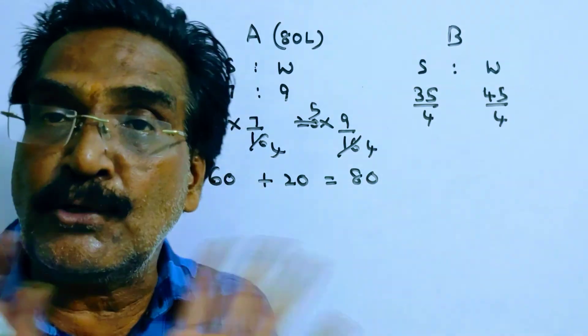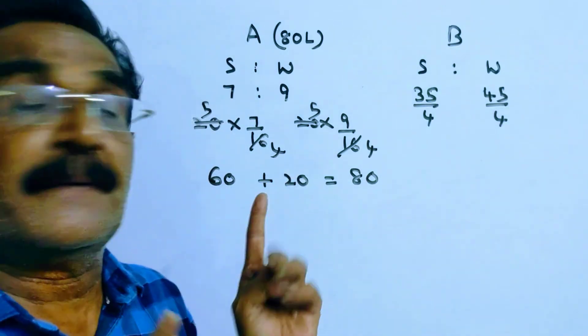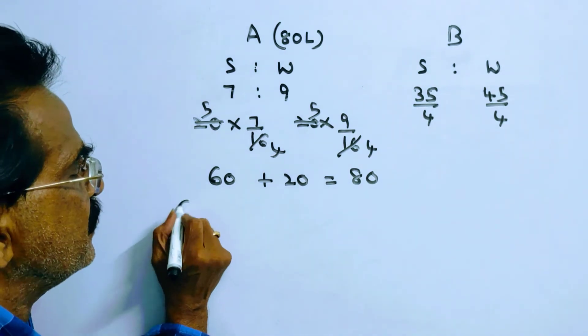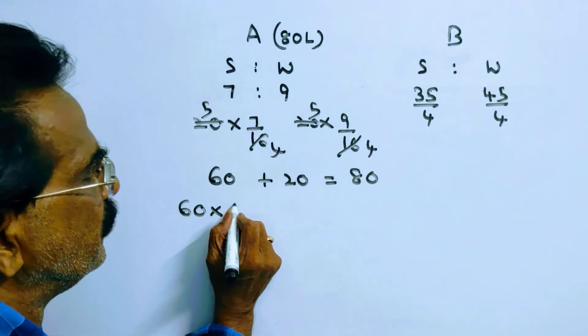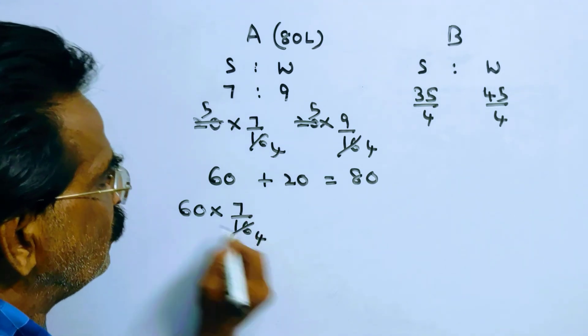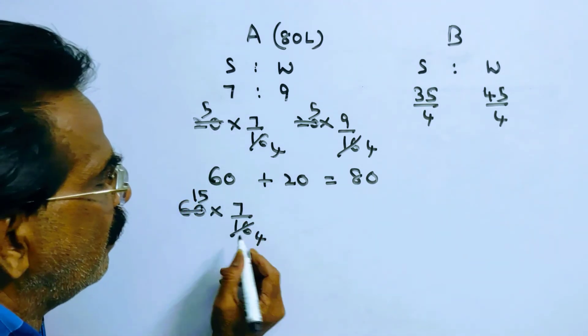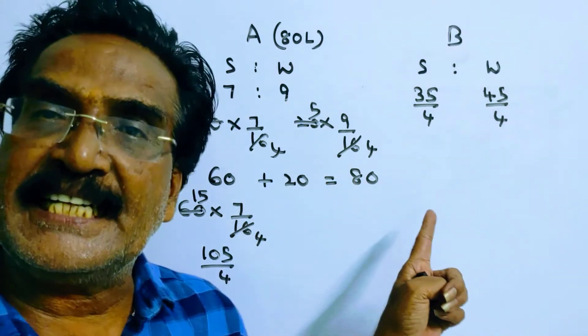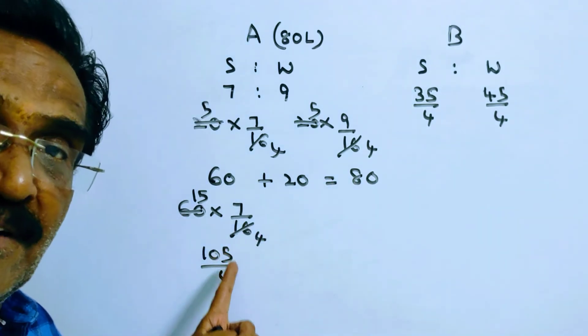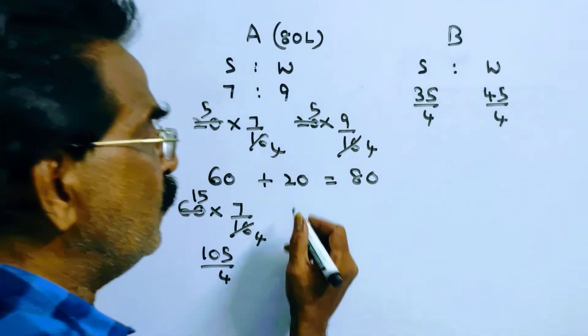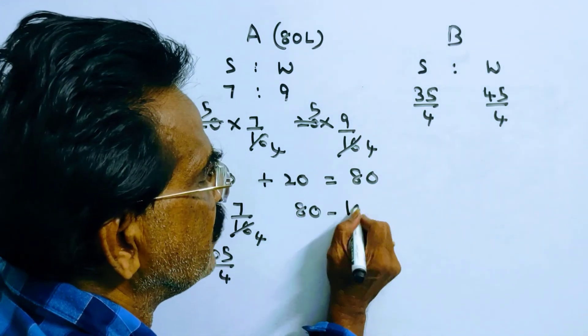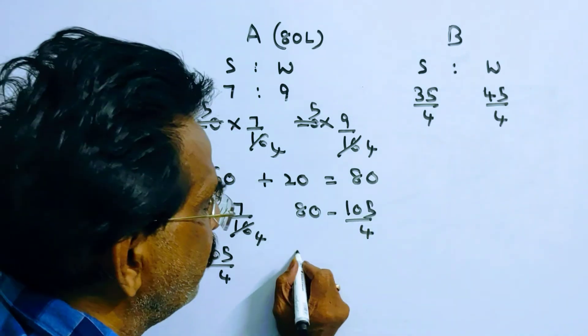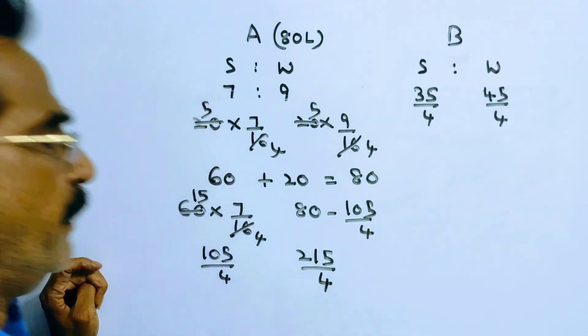In this 20 liters, there is no spirit - this is pure water. In the 60 liters, the quantity of spirit is 60 × 7/16 = 105/4. Total mixture is 80 liters, of which spirit is 105/4 liters. So water is 80 - 105/4 = 320/4 - 105/4 = 215/4 liters.